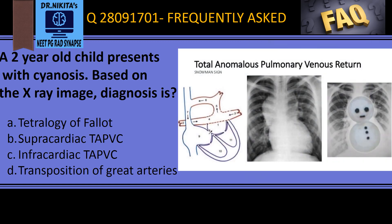The snowman's heart shape is seen in total anomalous pulmonary venous connection, that is TAPVC, so the answer is either option B or option C. In supracardiac TAPVC, the pulmonary veins, rather than going into the left atrium, form a common vein — the left vertical vein — which drains into the SVC.